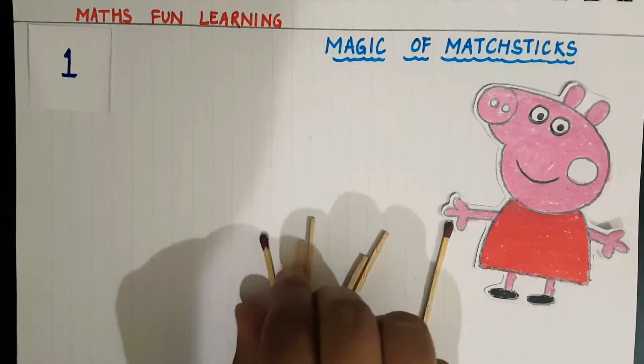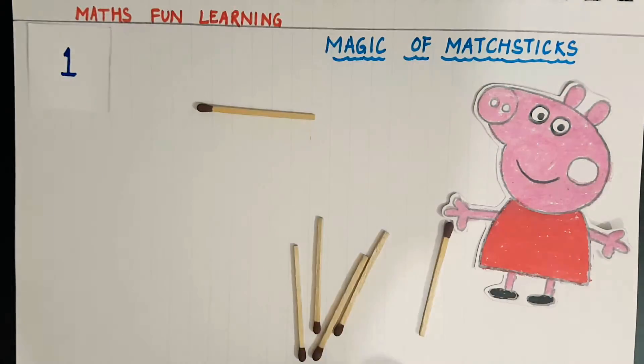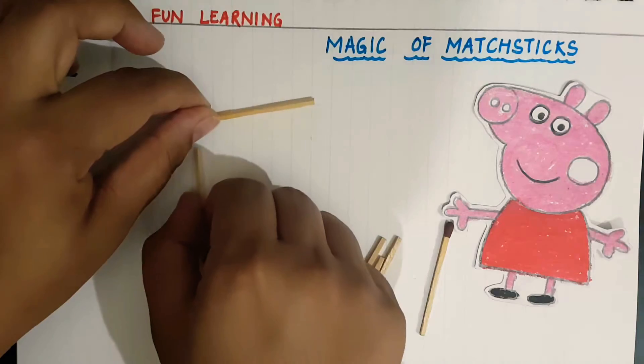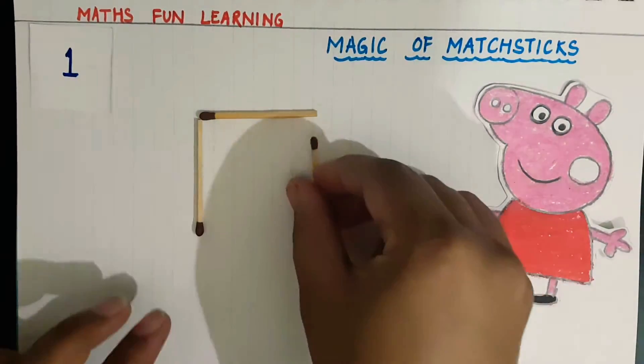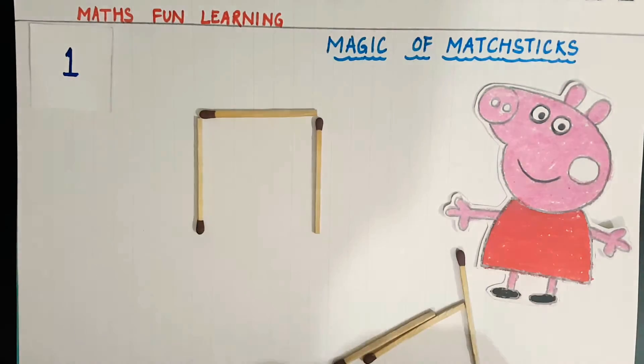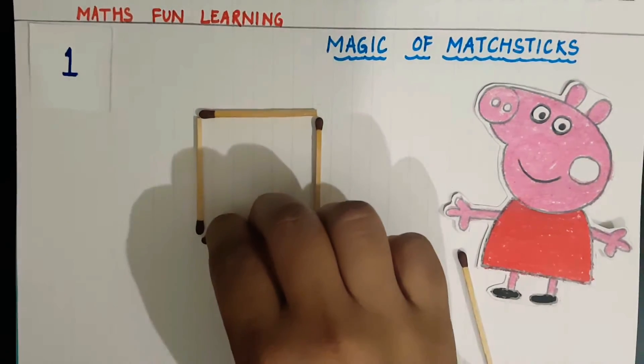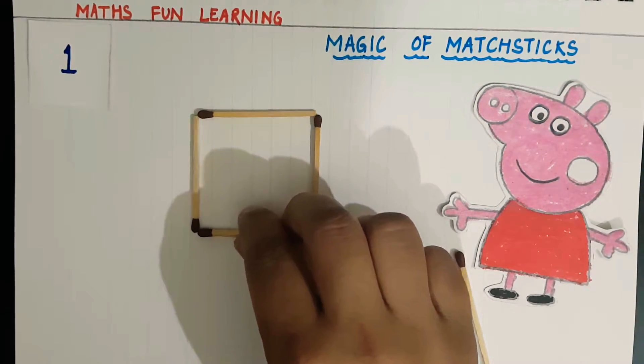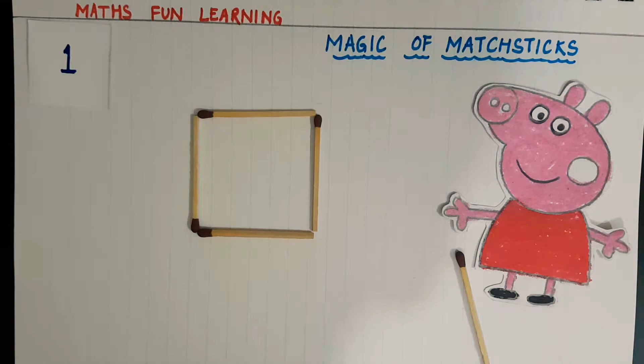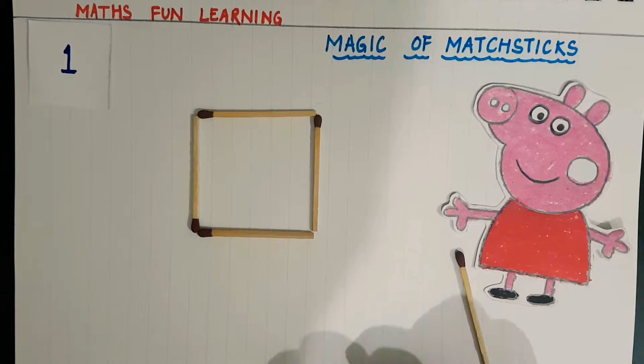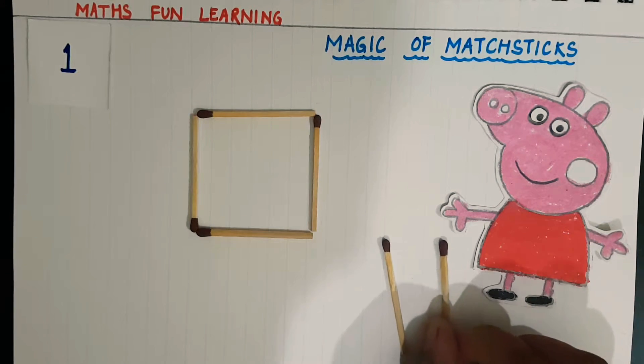One, two, three, four. Oh, what is this? I used four matchsticks here and with the help of four matchsticks I drew only one square. So how can I make five squares? Think about this.